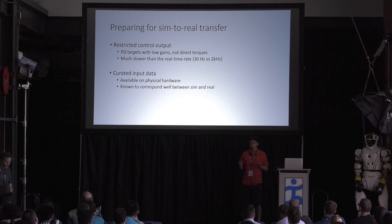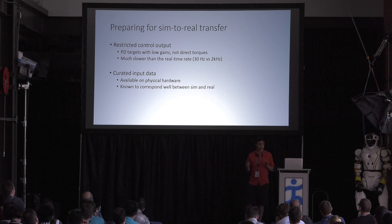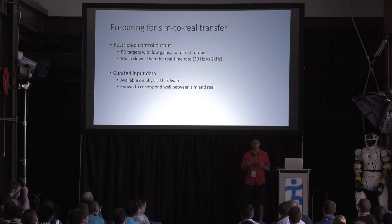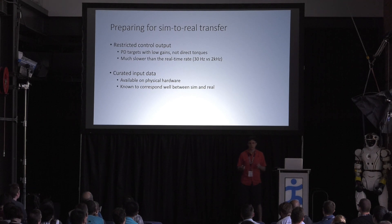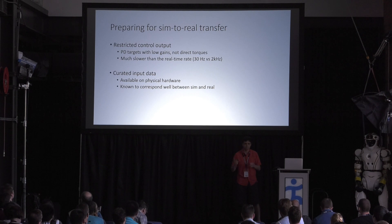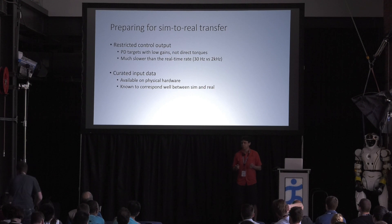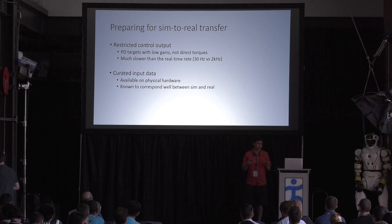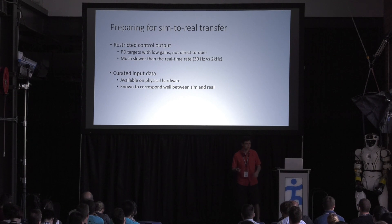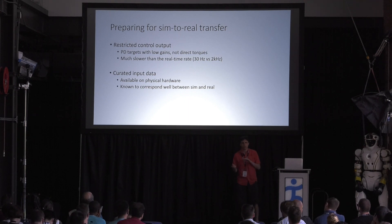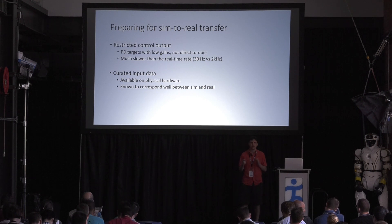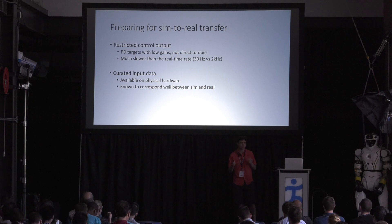Moving a policy from simulation to hardware is not exactly the most trivial task. What we're doing to approach this problem is structure the policy in a way that facilitates good behavior while making flagrant misbehavior — like moving by vibrating across the floor at some ridiculous speed — much more difficult to even happen. The most important part of this is that rather than having the learned policies output direct motor torques at the full real-time rate, we're having them output targets for a PD controller running at a much slower rate, something like 30 Hz versus 2,000 Hz. Another important thing is curating the input data — removing any input data that's probably not necessary and that differs significantly between simulation and hardware or just isn't reliable on hardware.